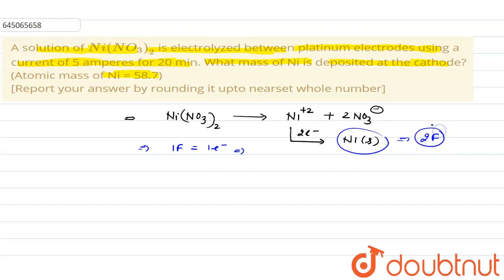Now in the question it is given that I is equal to 5 amperes while time is 20 minutes, or I can write it in seconds, 20 into 60 seconds. We can find out here q, q is always given as I×t, so it will be equal to 5 into 20 into 60 and it would be equals to 6000. This is the value of q.